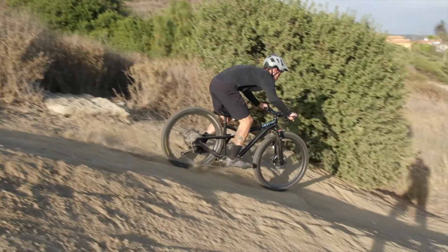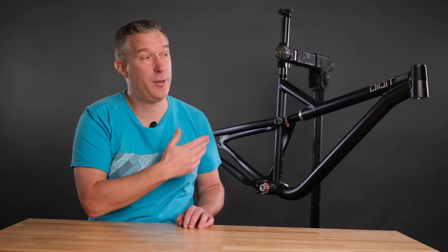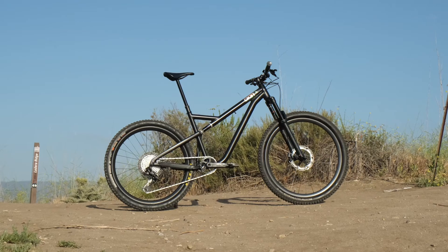But wait! There's more! Other advantages include the clean, minimalist design – it looks more like a normal bike and less of a contraption than other suspension bikes, and the straight seat tube allows for the longest dropper posts even on small frame sizes.